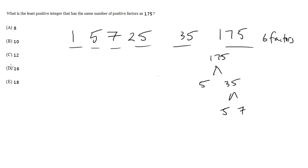So let's start from the smallest and find the first one that works. 8. Well, 8 is divisible by 1 and 8, by 2, by 4, and that's it. It's only got 4. No good.